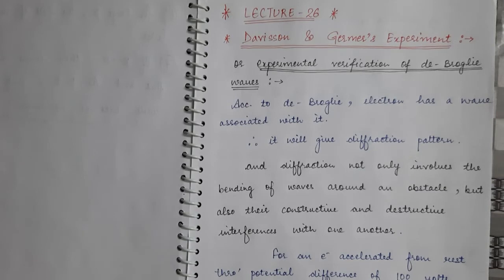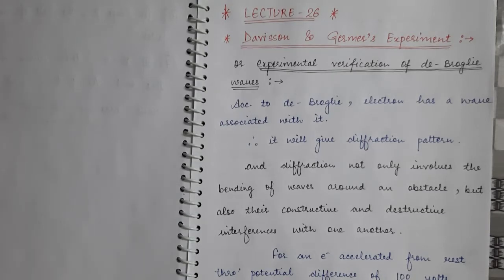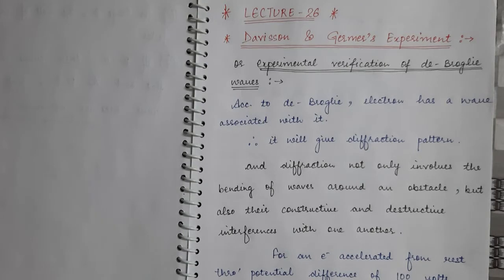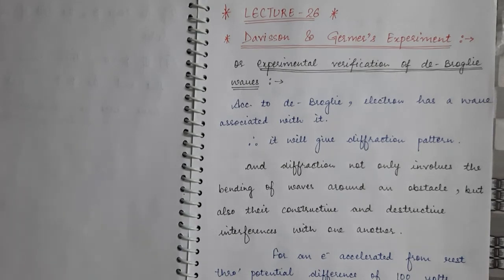According to de Broglie, we have already studied that every material moving particle is associated with a wave. Here we have considered the case of the electron. Davisson and Germer proved that the electron beam has wave character, so we are concentrating on the electron beam here.